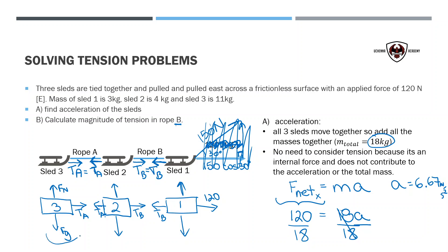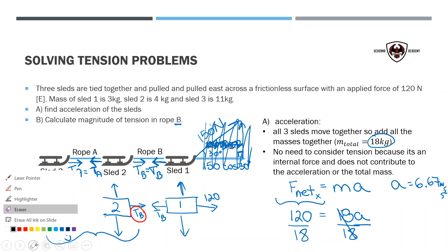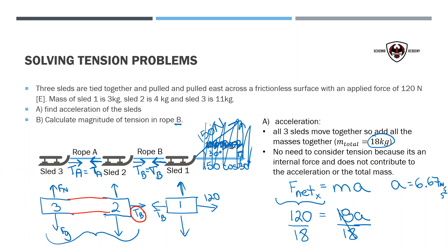What I could do is combine sleds 2 and 3 together. That eliminates tension A because tension A is the exact same magnitude but opposite in direction on each sled, so they cancel each other out. The ropes are also massless and don't stretch. So I can cancel out tension A and treat sleds 2 and 3 as a single unit. That leaves only tension in rope B. The free body diagram for the combined object just has the net force acting to the right, with normal and gravitational forces canceling in the y-direction.